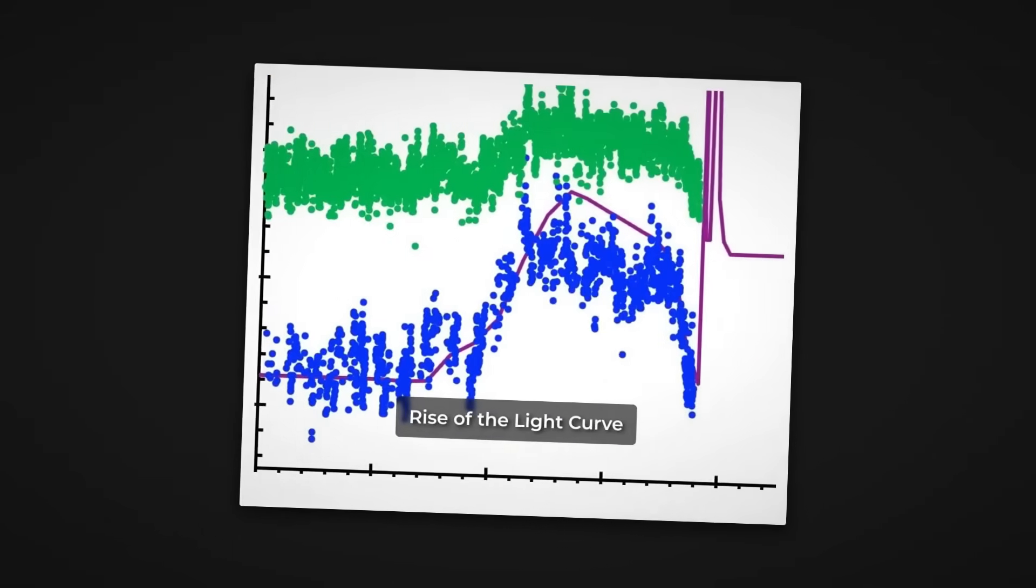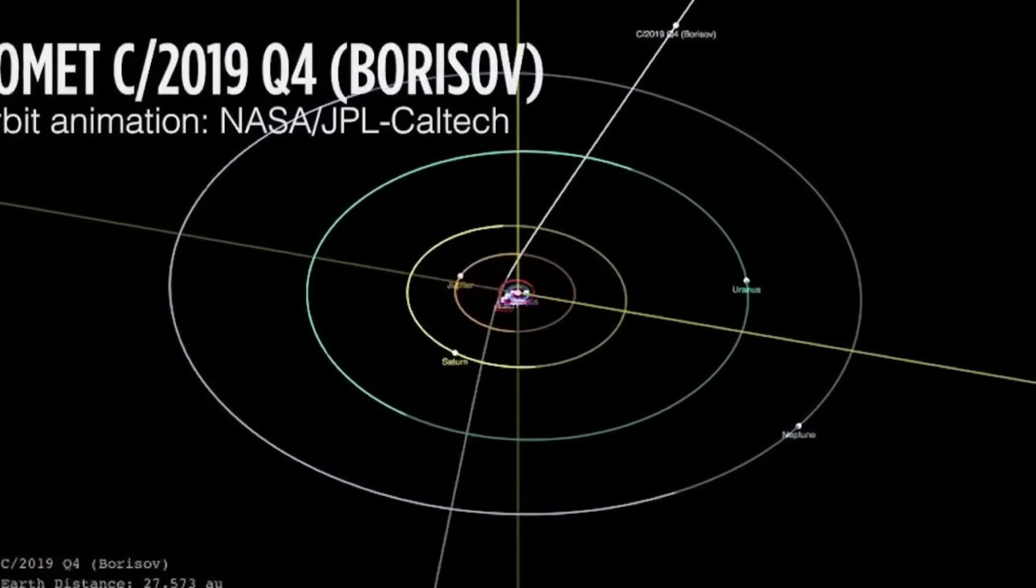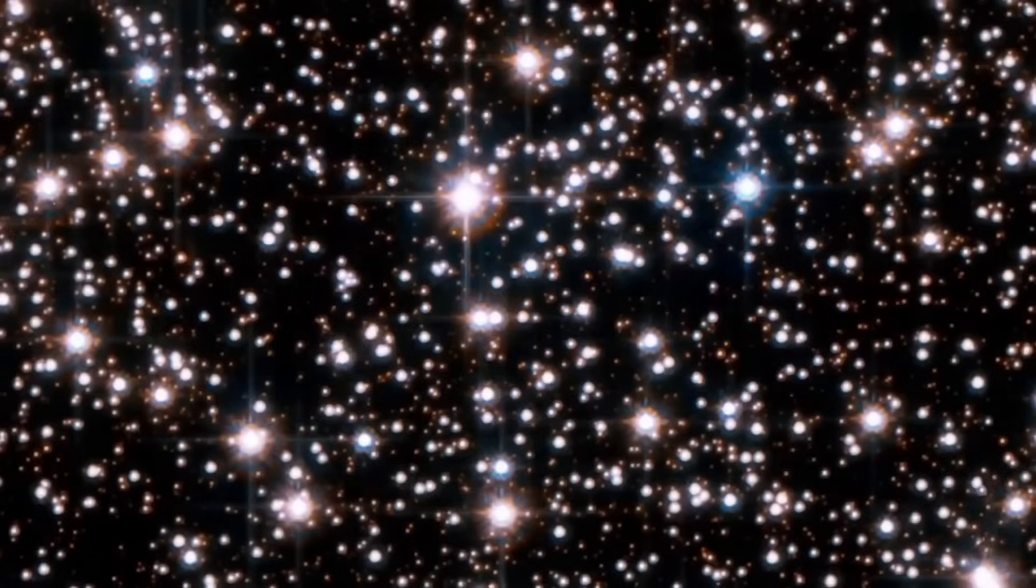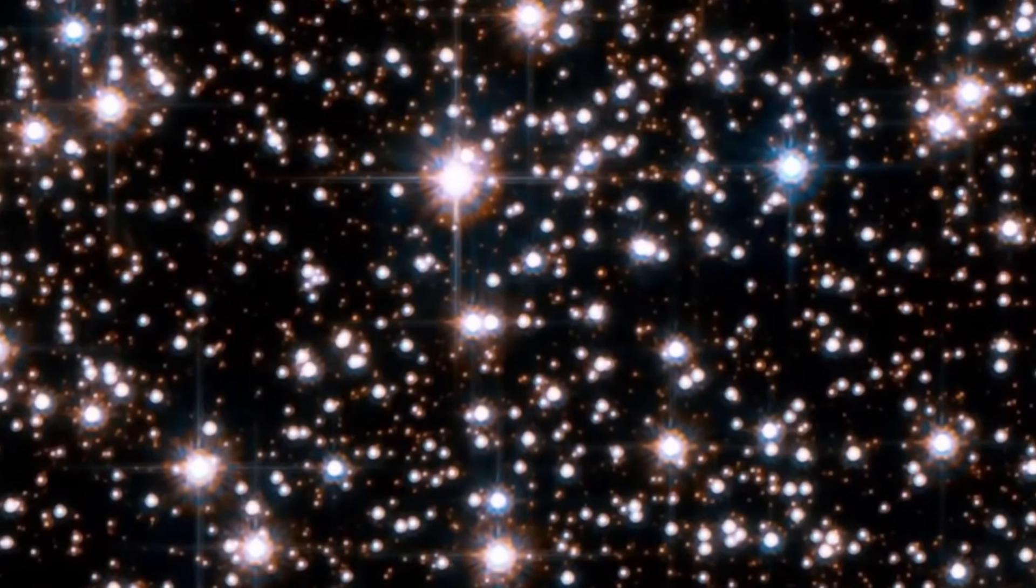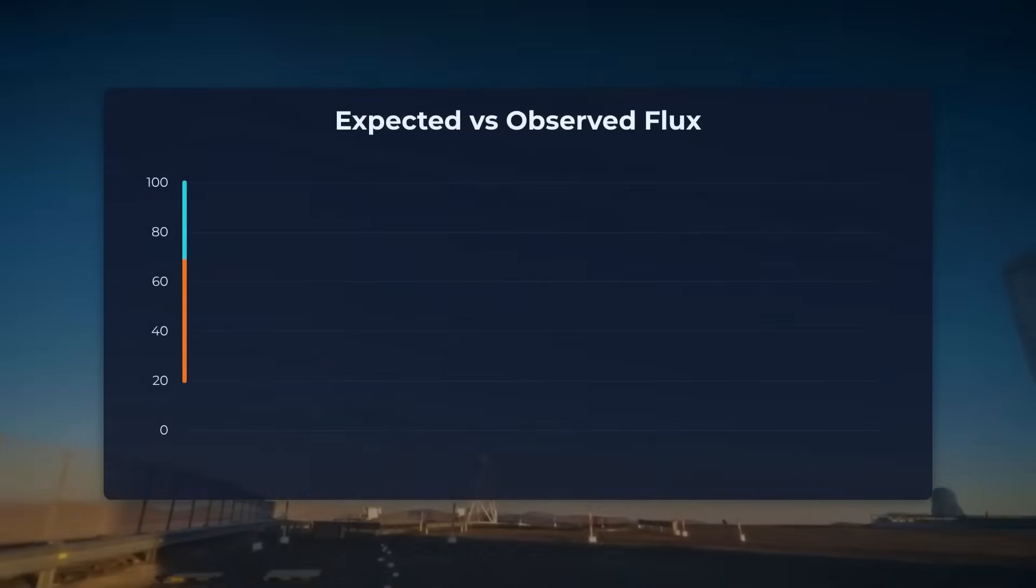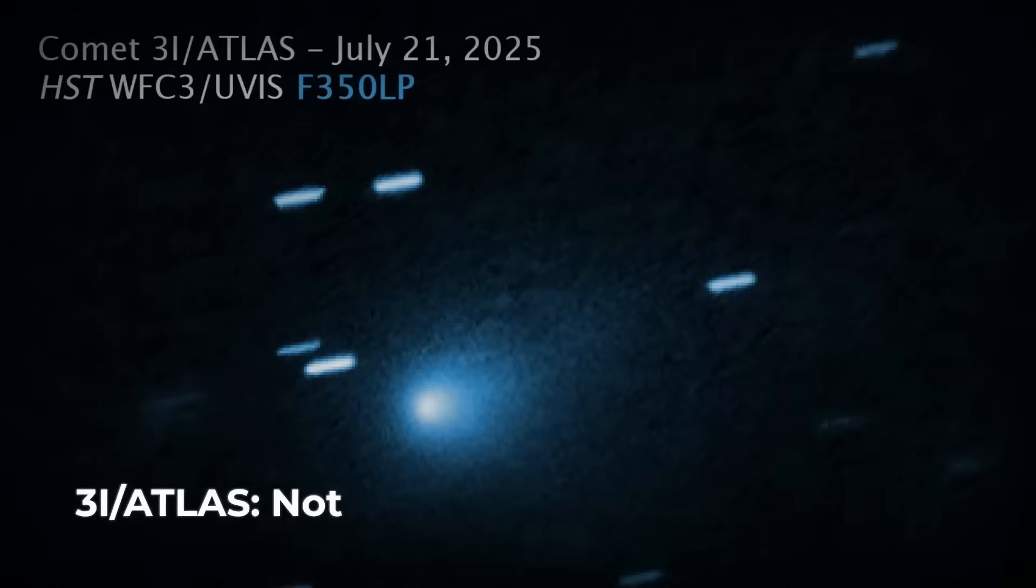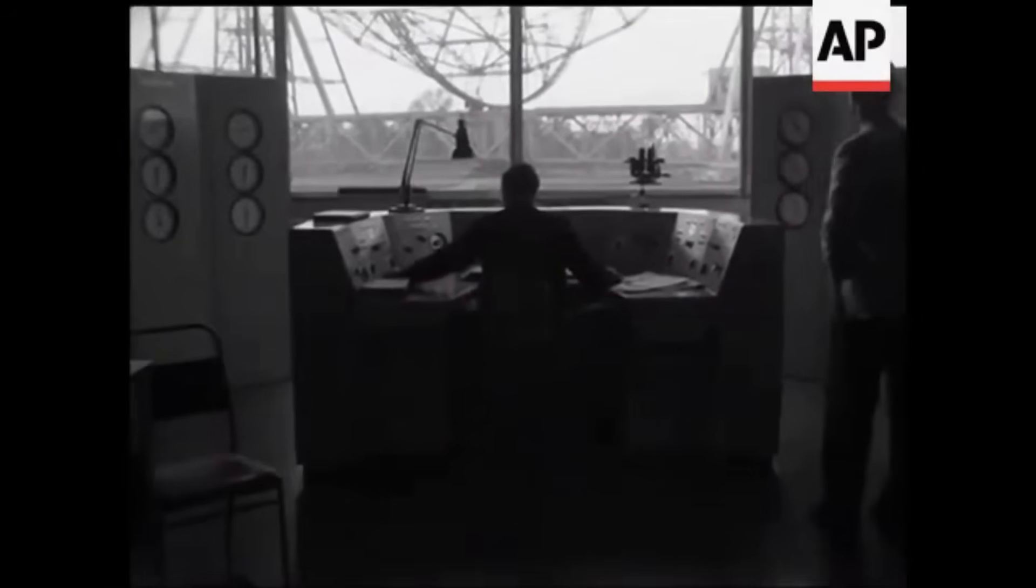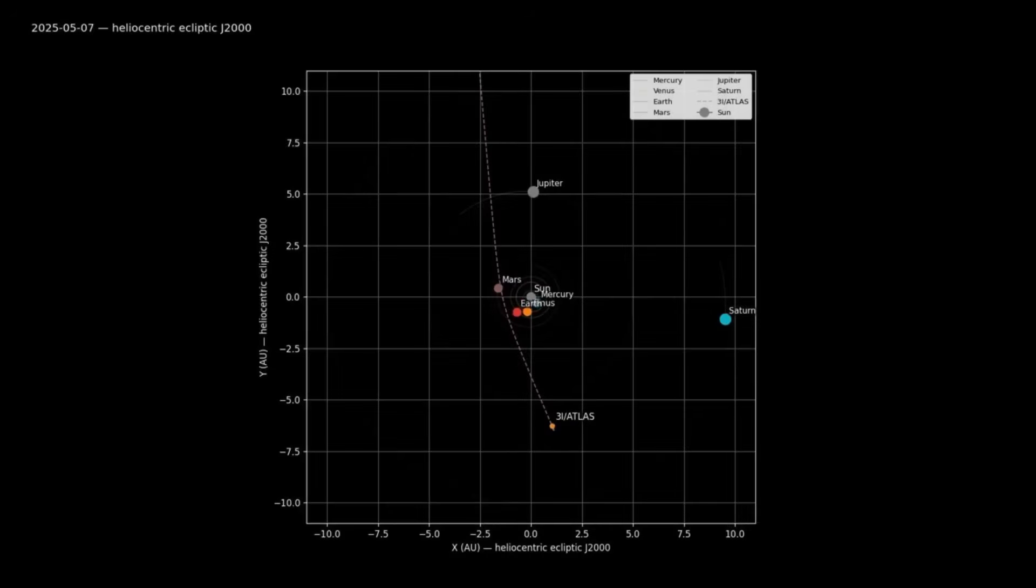Communication is key. Discord channels, telegram groups, and email lists allow observers to share alerts in real time. When a new outburst is detected in one part of the world, telescopes on the opposite side can immediately pivot, ensuring no event is missed. This coordinated effort doesn't just improve data quality, it also speeds discovery, turning scattered observations into a cohesive timeline of activity.